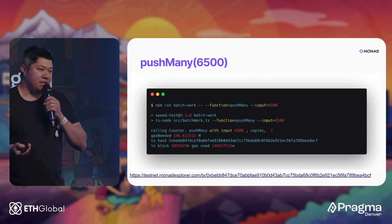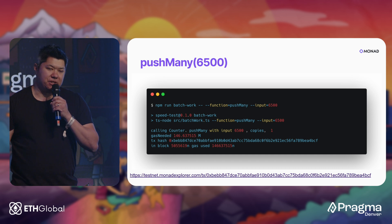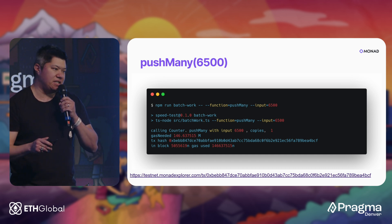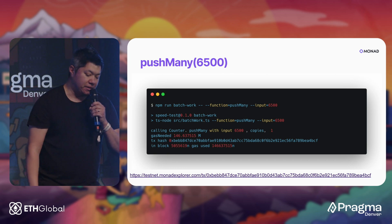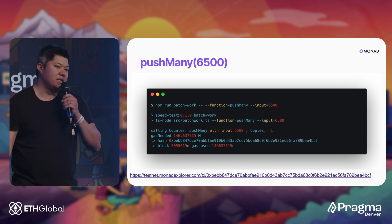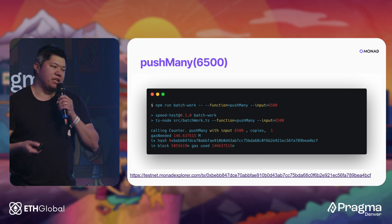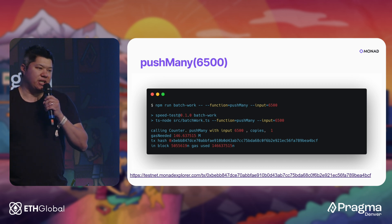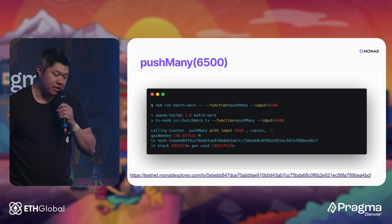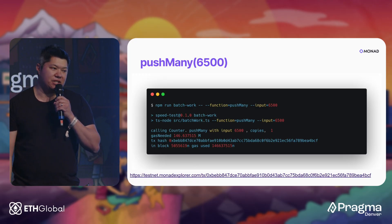Next I did push_many. I tried different numbers, did a binary search, and the max was around 6,700. So I ran push_many with 6,500, which allocates 6,500 storage slots. If you're an EVM person, each storage slot allocation costs about 20,000 gas. So this is quite expensive — it costs 146 million gas — and it completed within about a second. You can check the block explorer.